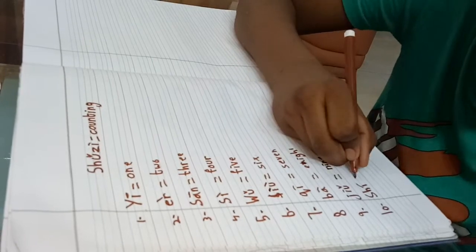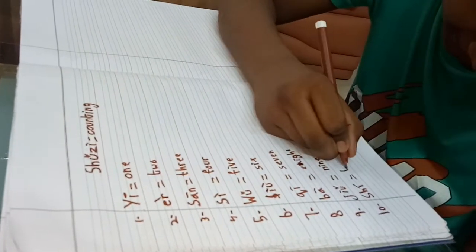And shi means ten. Nice! Now I will show you the pronunciation: yi, er, san, si, wu, liu, qi, ba, jiu, shi.